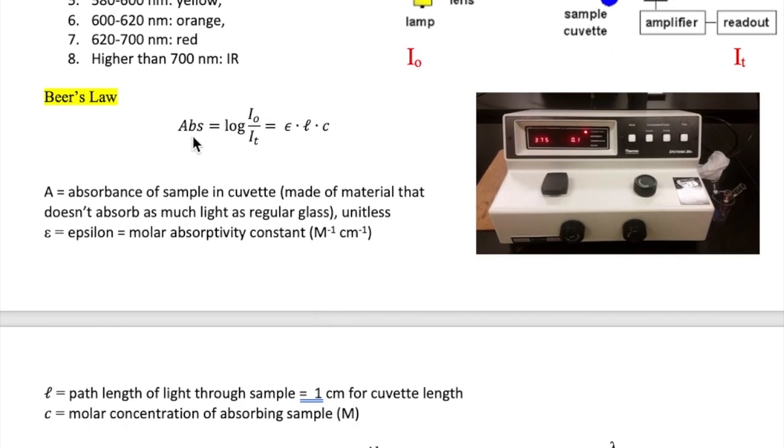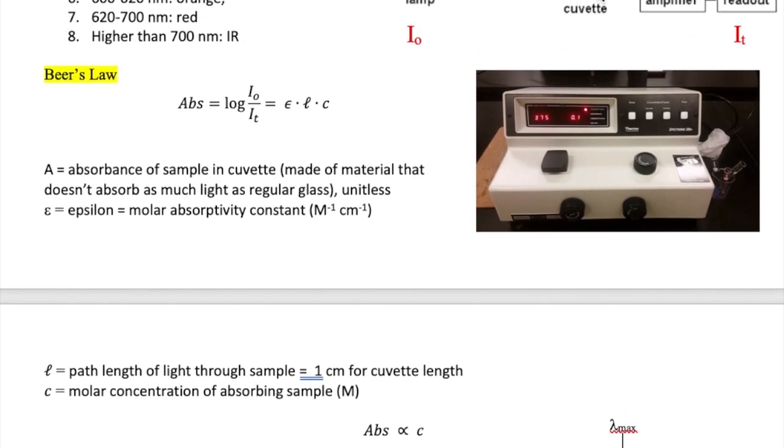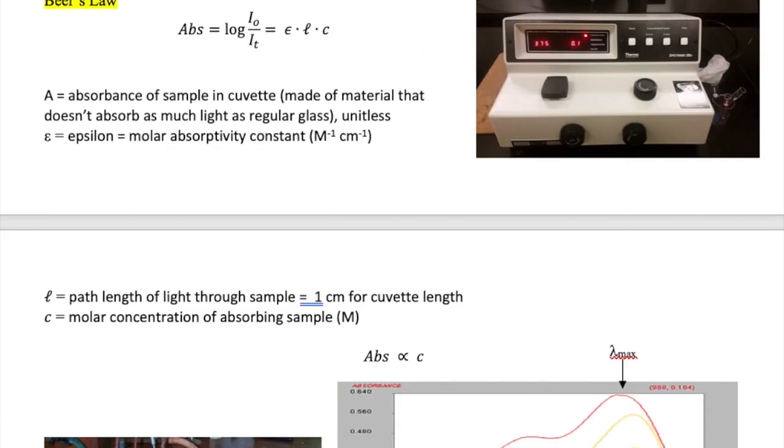The equation shows that absorbance depends on three variables. The length of the path, which is symbolized as the letter L. This is typically one centimeter for the cuvette that we're going to use. Another variable is epsilon, which is called the molar absorptivity constant, a value that depends on the type of solution we have. The third variable is C,